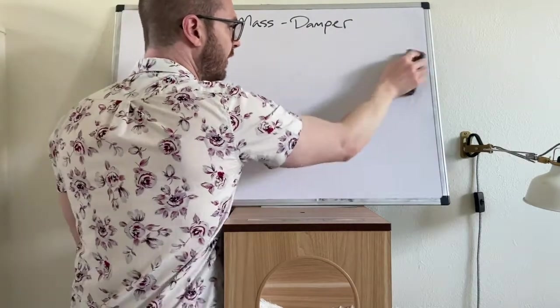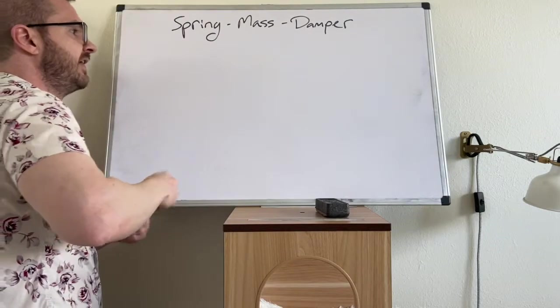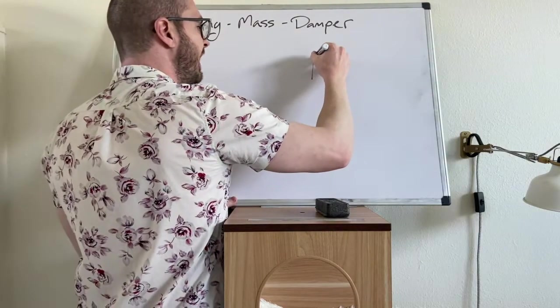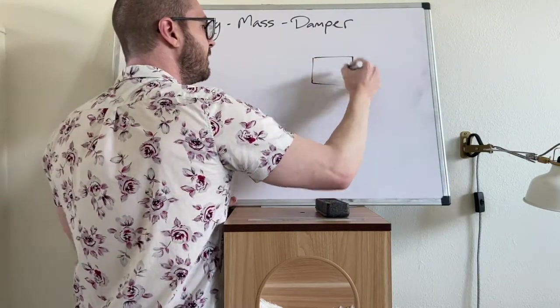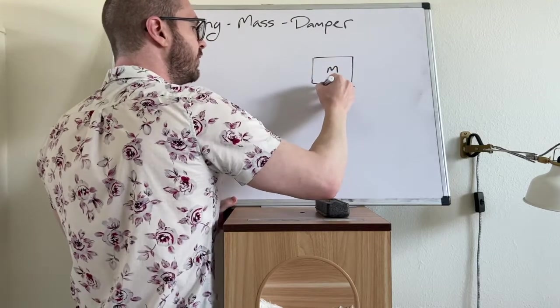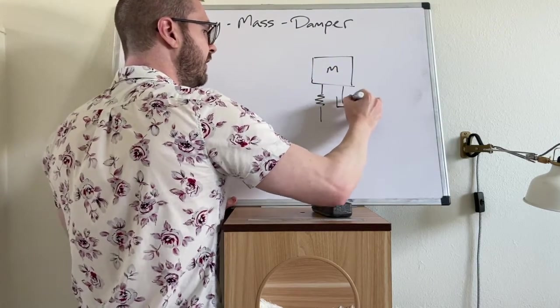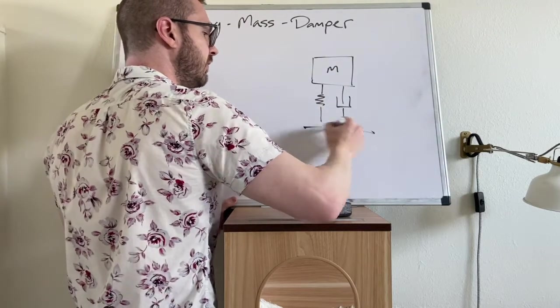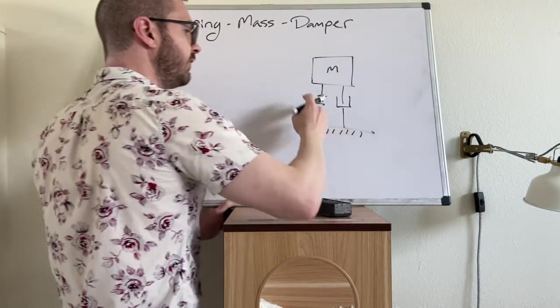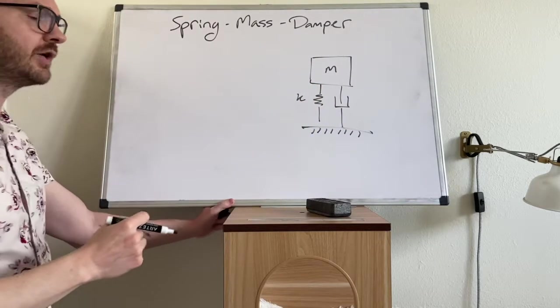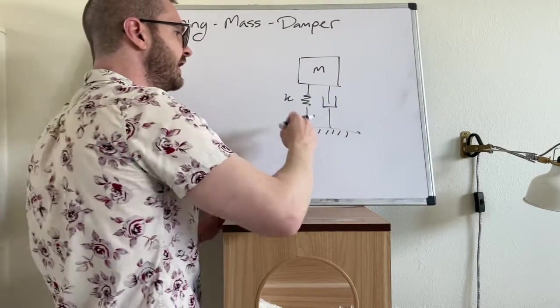So here's how we get started. Let's start by taking a mass and we're going to connect to it a spring and a damper. So this is the spring on the left and we're going to use a linear spring with spring coefficient k.